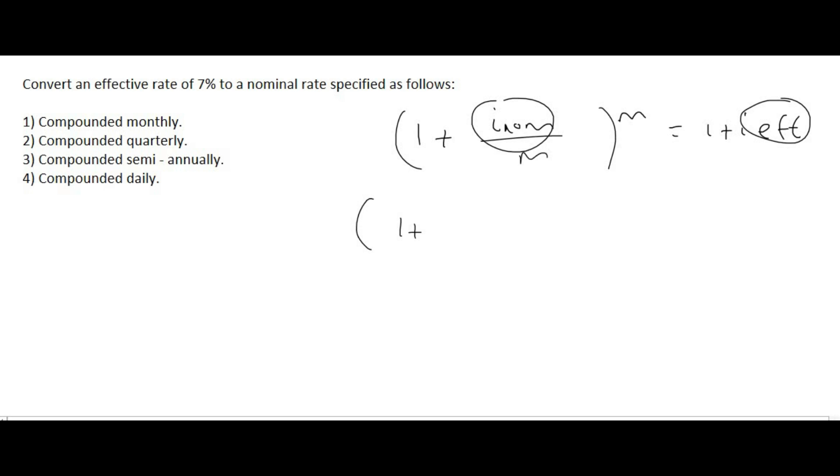So we fill in whatever we can. For number one, it's a compounded monthly question. So that'll be a 12 over here and a 12 over there. The effective interest rate has been given as 7%. That's 0.07.